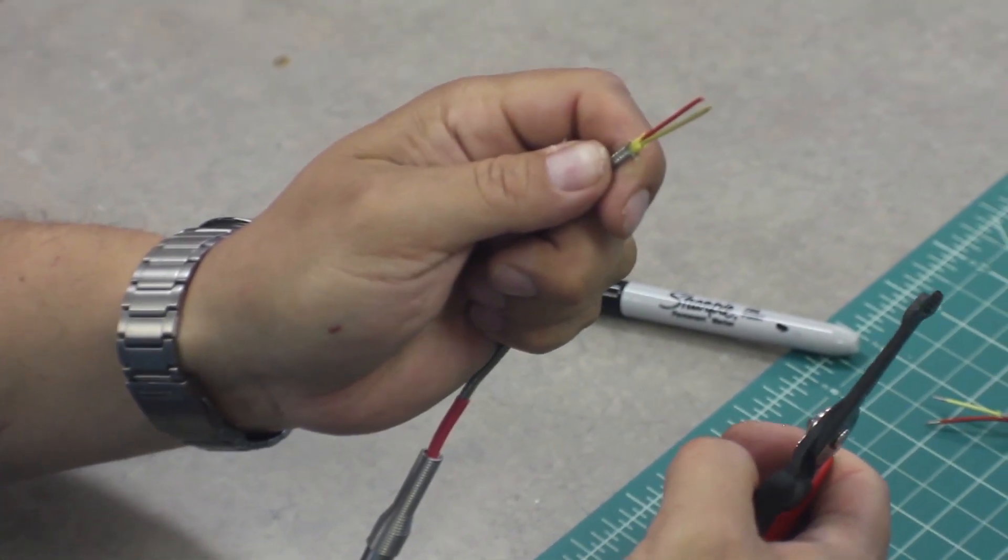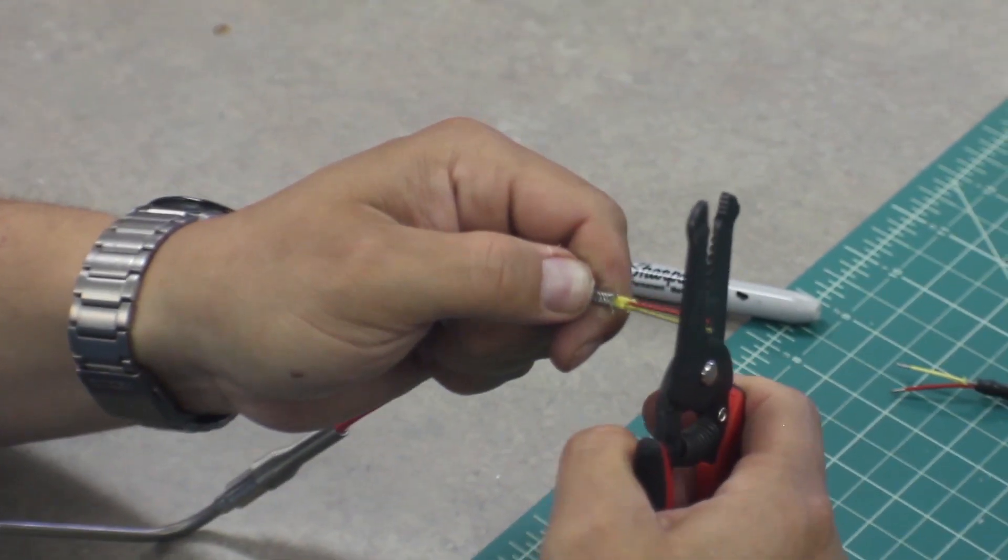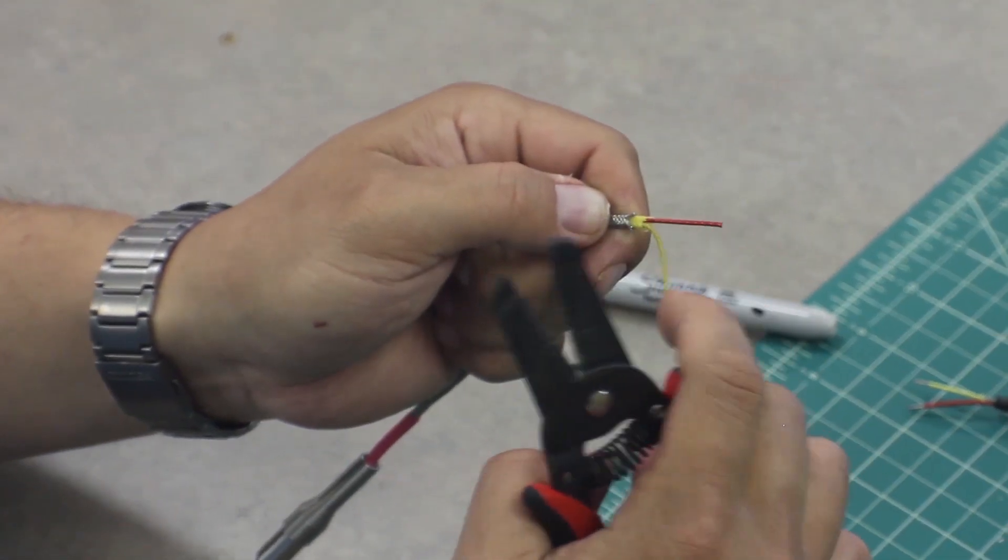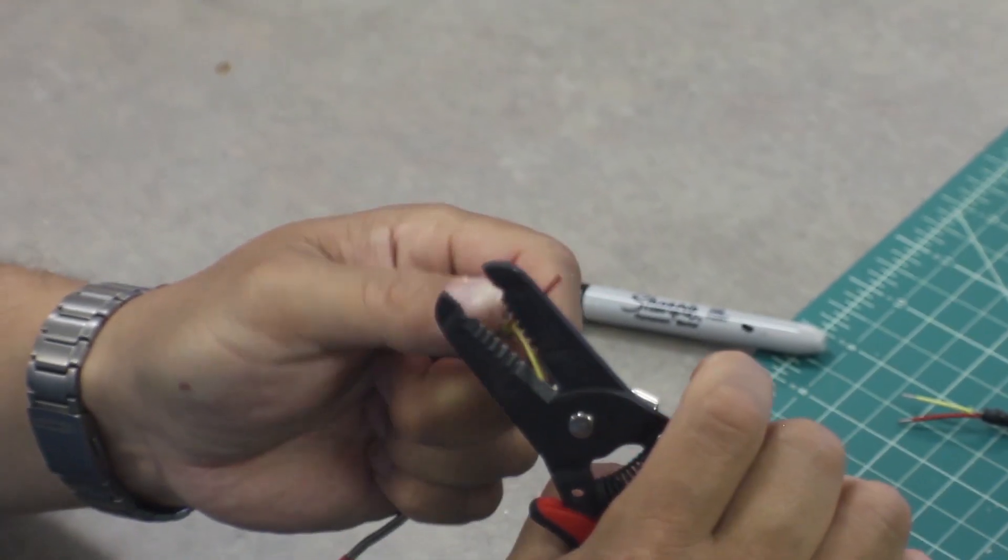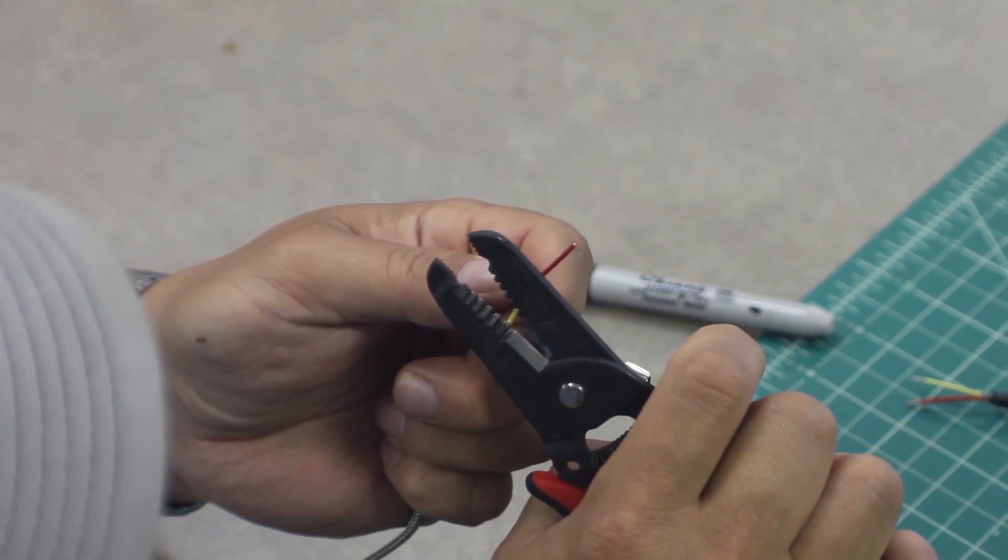Once removed, this will expose the two signal wires. Using the wire strippers, strip about a quarter inch from the ends of each of the yellow and red signal wires.